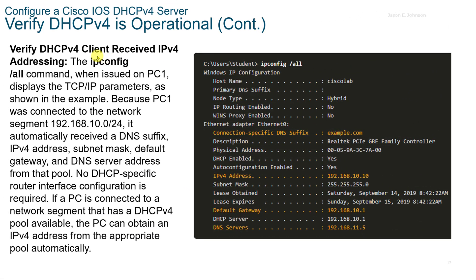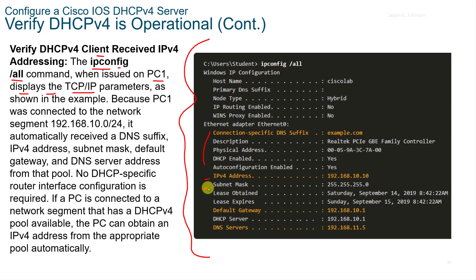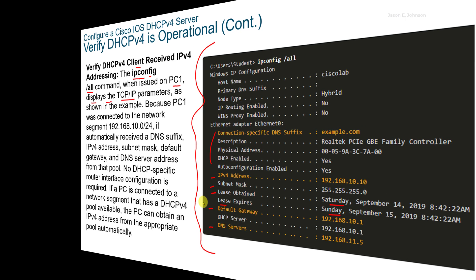On the client side, we can use the 'ipconfig /all' command, or 'ifconfig' on Linux. When issued on PC1, it displays TCP/IP parameters including the Ethernet information, IPv4 address, subnet mask, lease obtained and expiration times, default gateway, and DNS servers.